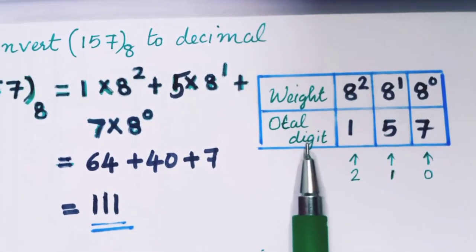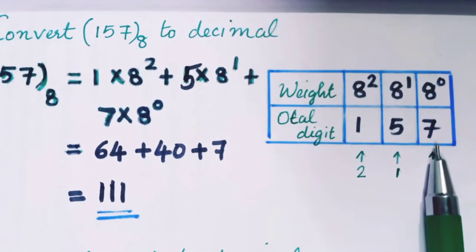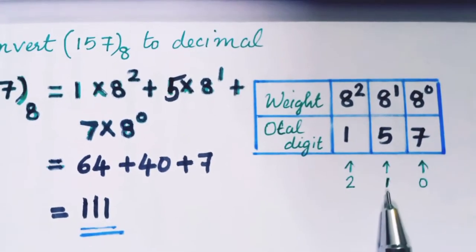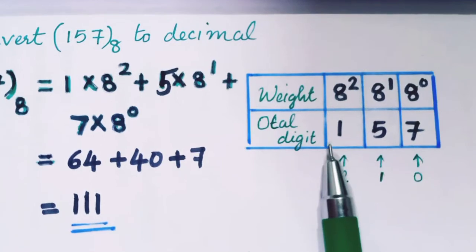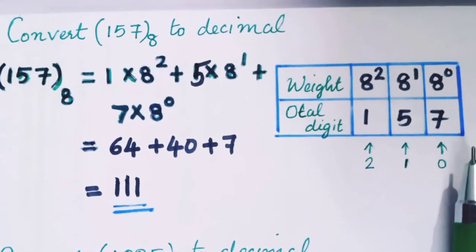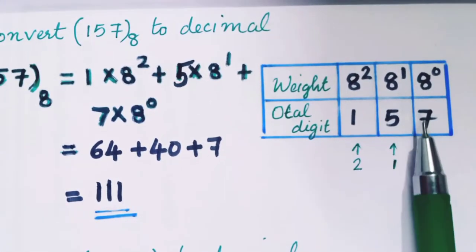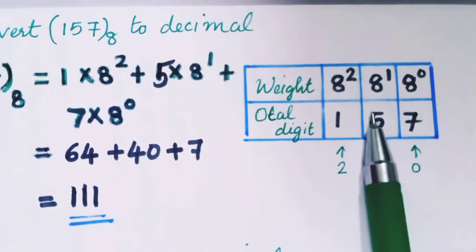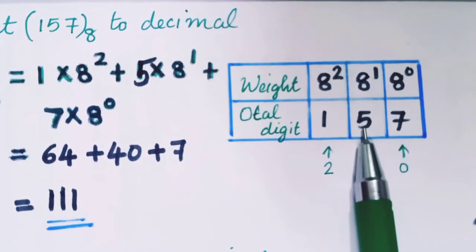The octal number is 157, so the digits are 1, 5, 7. The least significant digit is 7, which is at position 0. Digit 5 is at position 1. Digit 1 is at position 2. The weight for this octal-to-decimal conversion is base 8, so 7 gets weight 8 raise to 0, 5 gets weight 8 raise to 1.